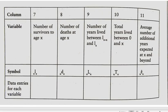This is followed by a few more columns. Column seven, number of survivors to age X. Number eight, number of deaths at age X. Those two, of course, added together would give you the total population at the beginning of the time frame, and the number of years lived, number nine. Column 10, total years lived between zero and X, so that's a cumulative total, and 11, the average number of additional years expected at X and beyond. That's how we actually get to the life expectancy, which is a pretty widely known statistic from the field of demography.